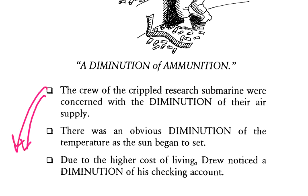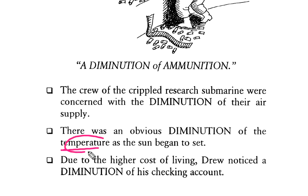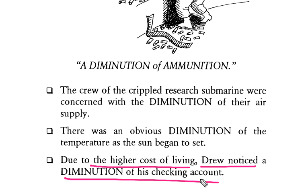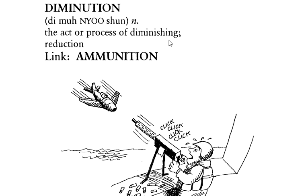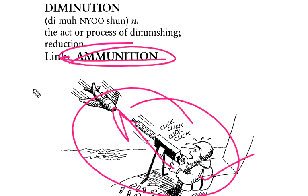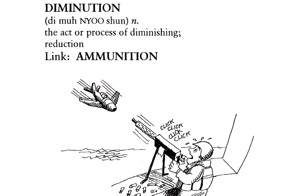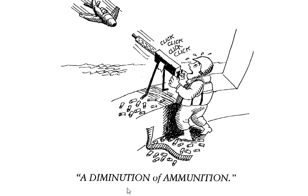Vaise vaise temperature kya horote te — khatam ho raha tha, diminution of the temperature. Due to their higher cost of living, he drew notice of the diminution of his checking account — inki checking account ka kya horote te, khatam horote te paise, to diminution of the checking account. So diminution meaning: the act or process of diminution, koi cheez kam hona, reduction hona. Link kya hai — the ammunition, jis tarah ammunition use karta hao uska reduction. Diminution of ammunition.